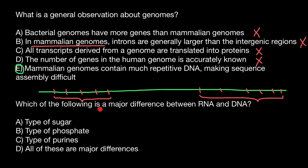Next question: which of the following is a major difference between RNA and DNA? The hint is given in their names. RNA stands for ribonucleic acid — R stands for ribose, which is a sugar. DNA stands for deoxyribonucleic acid, meaning it has the same sugar, ribose, but at carbon number 2 it is missing an oxygen — hence 'deoxy.' So the correct answer is Variant A: the type of sugar makes the difference between RNA and DNA.